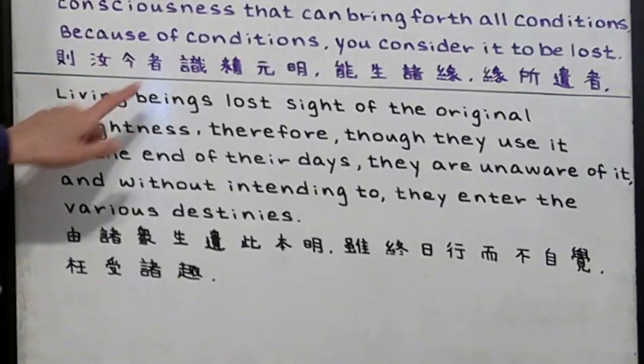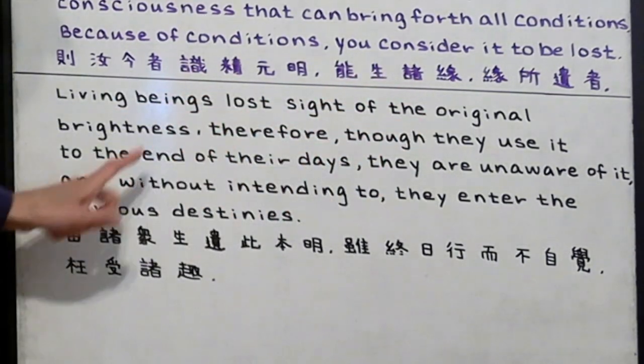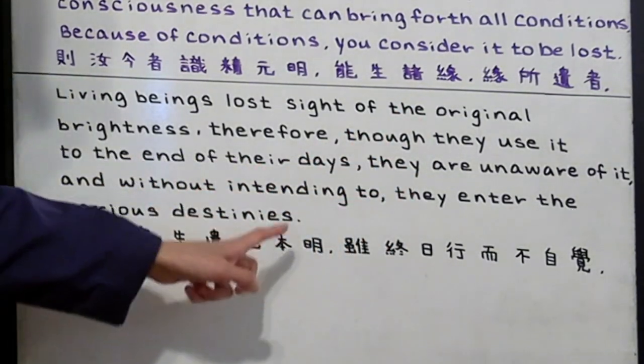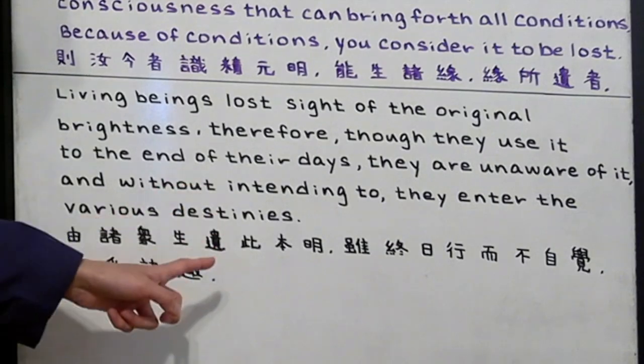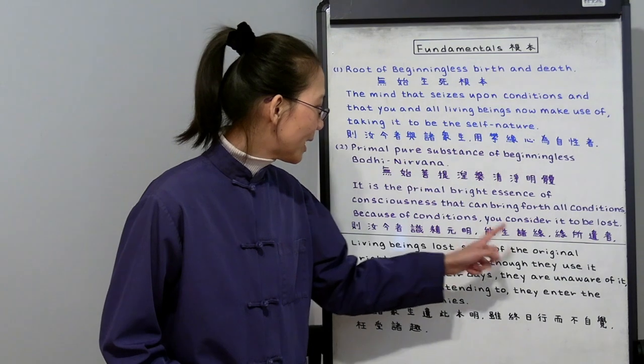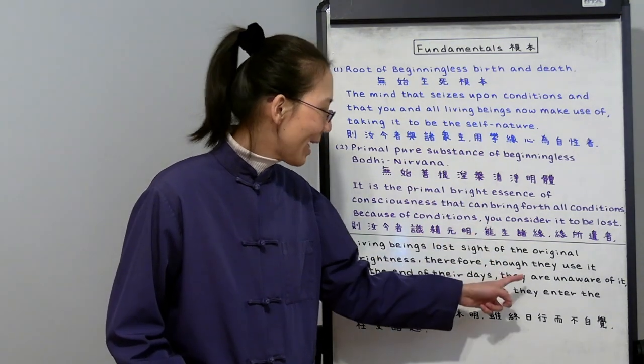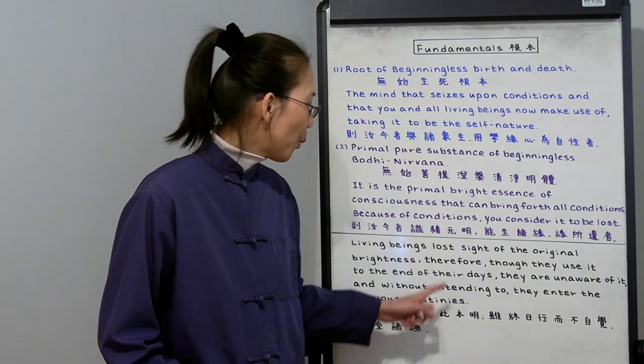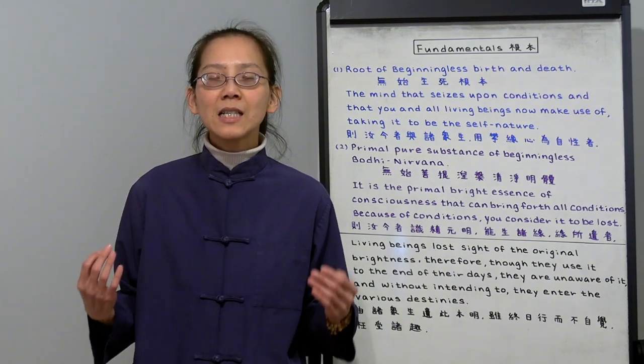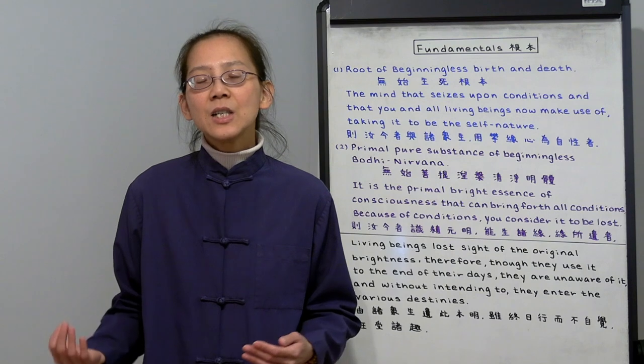In conclusion, living beings lost sight of the original brightness. Therefore, though they use it to the end of their days, they are unaware of it. And without intending to, they enter the various destinies. All of us lost sight of our pure mind. Even though we use it and we have it till the end of our day, we are unaware of it. That's why without intending to, we enter the six grounds of reincarnation. We actually don't deserve reincarnation. We are unjustly wronged into reincarnation.